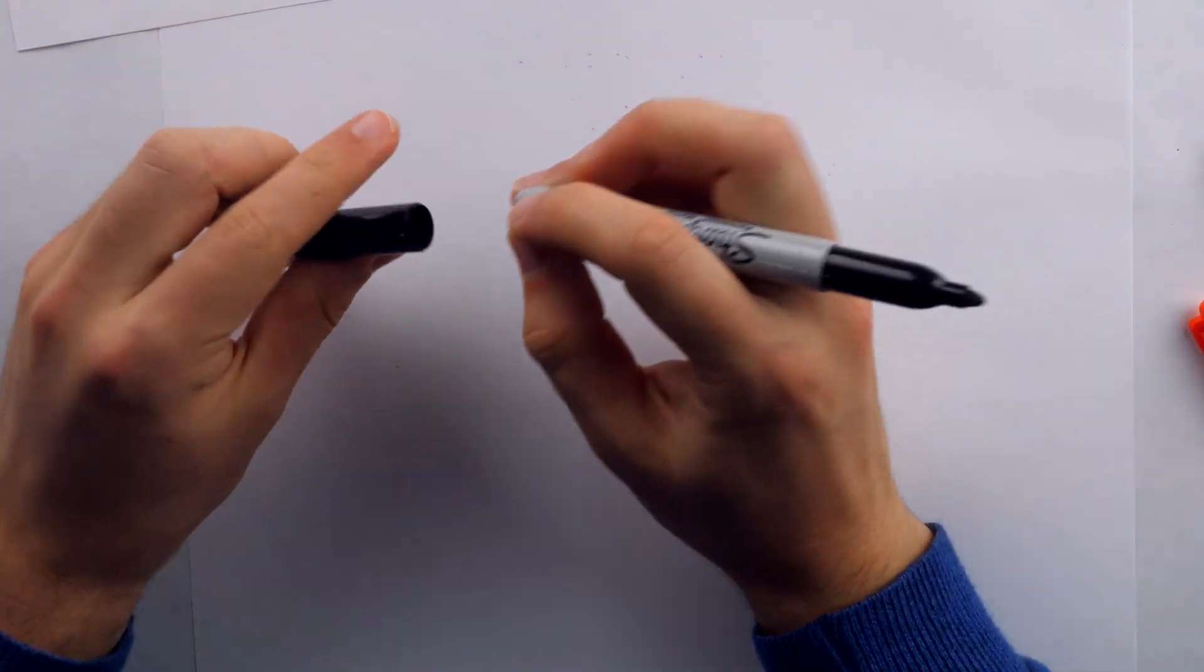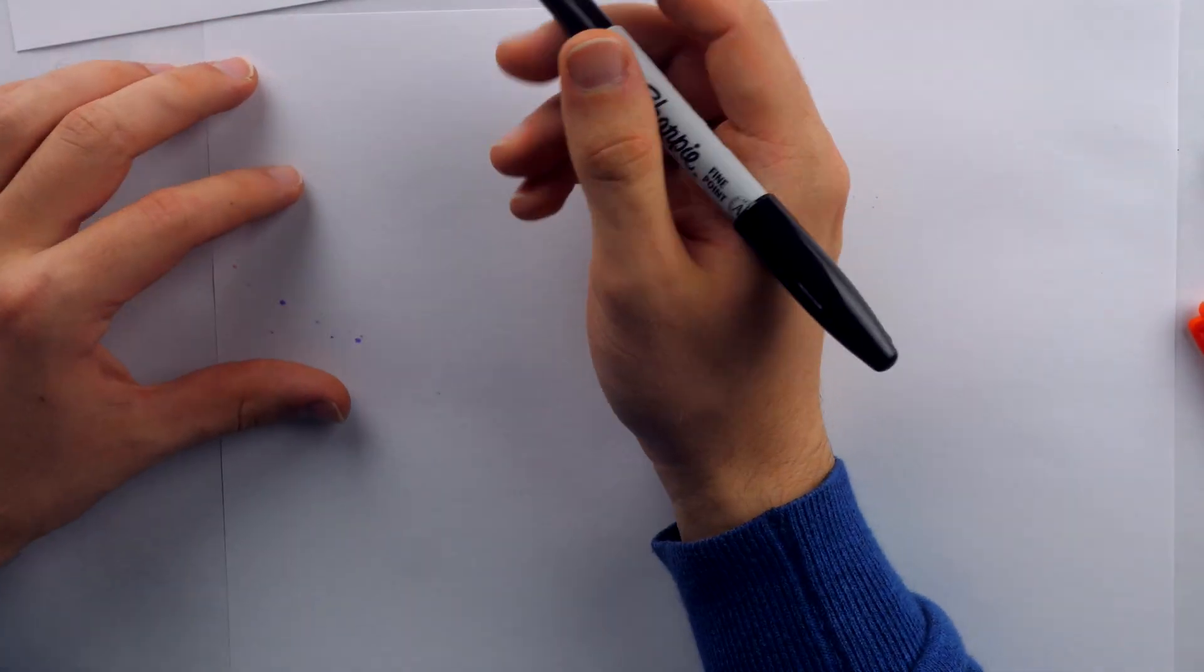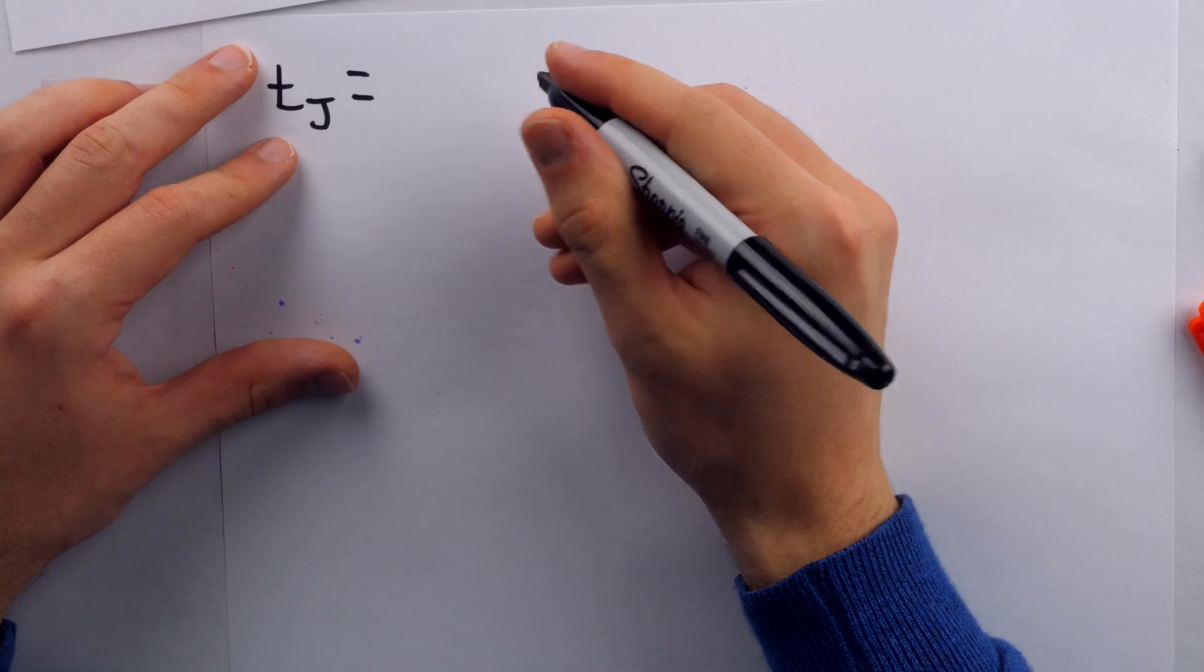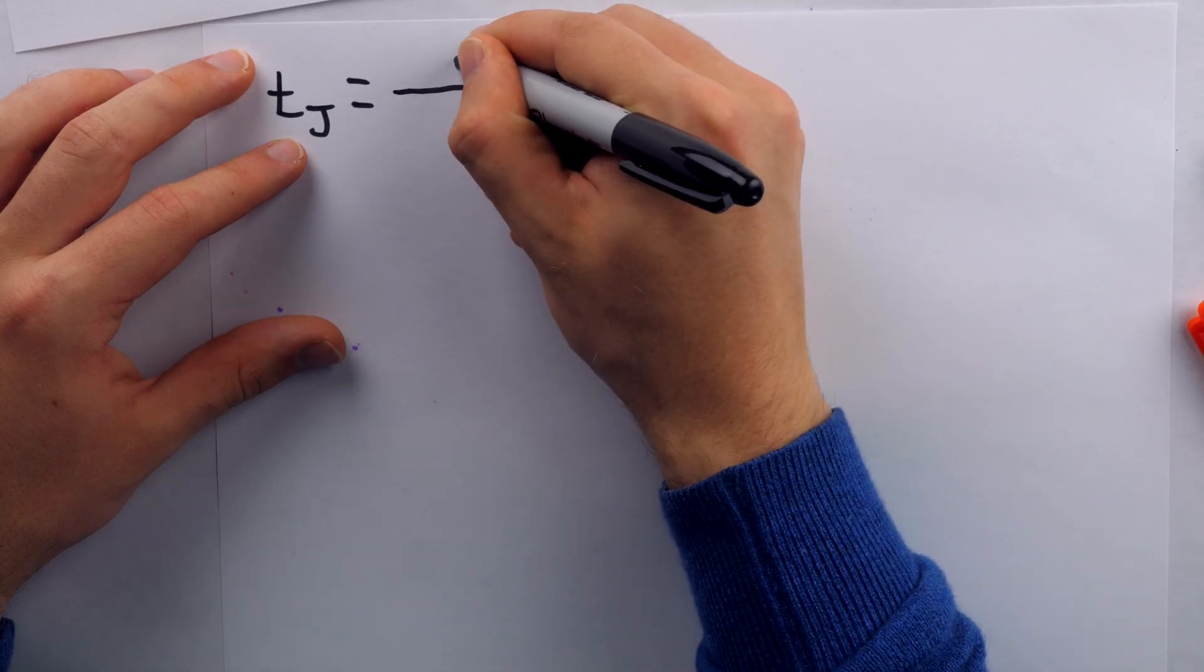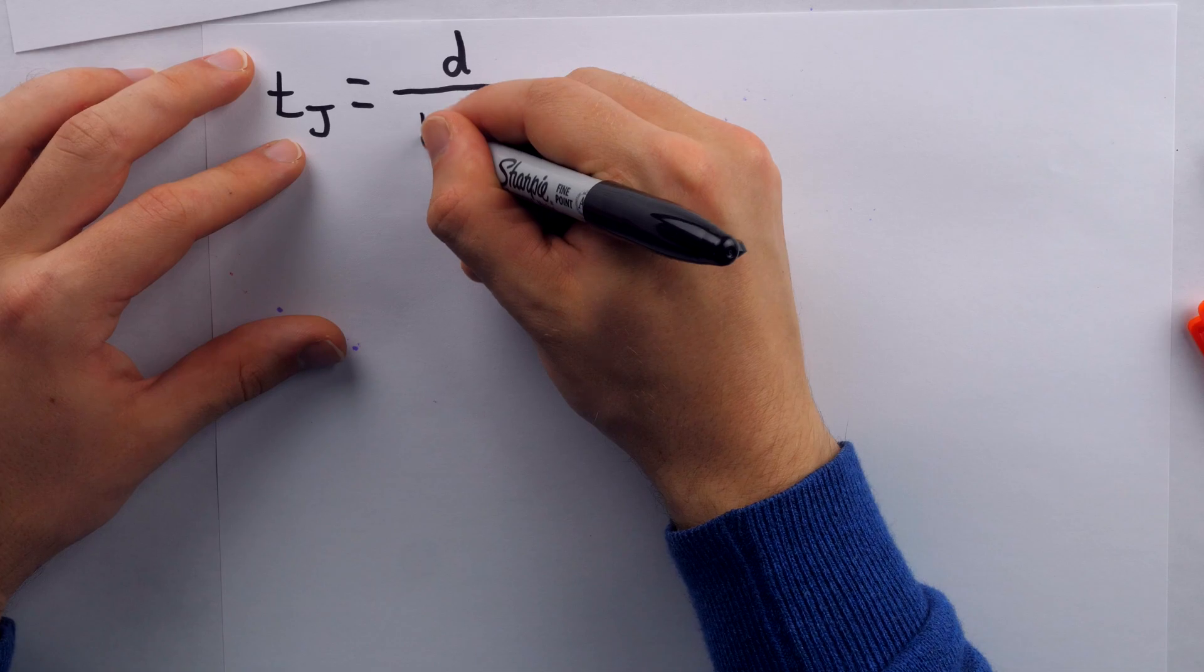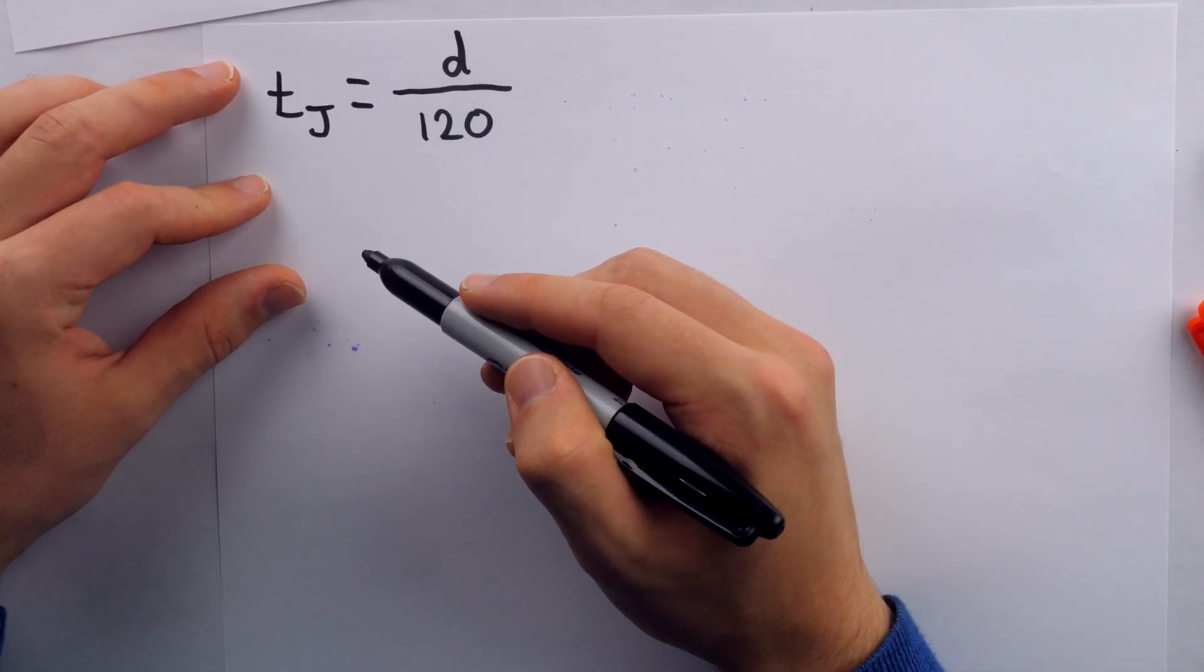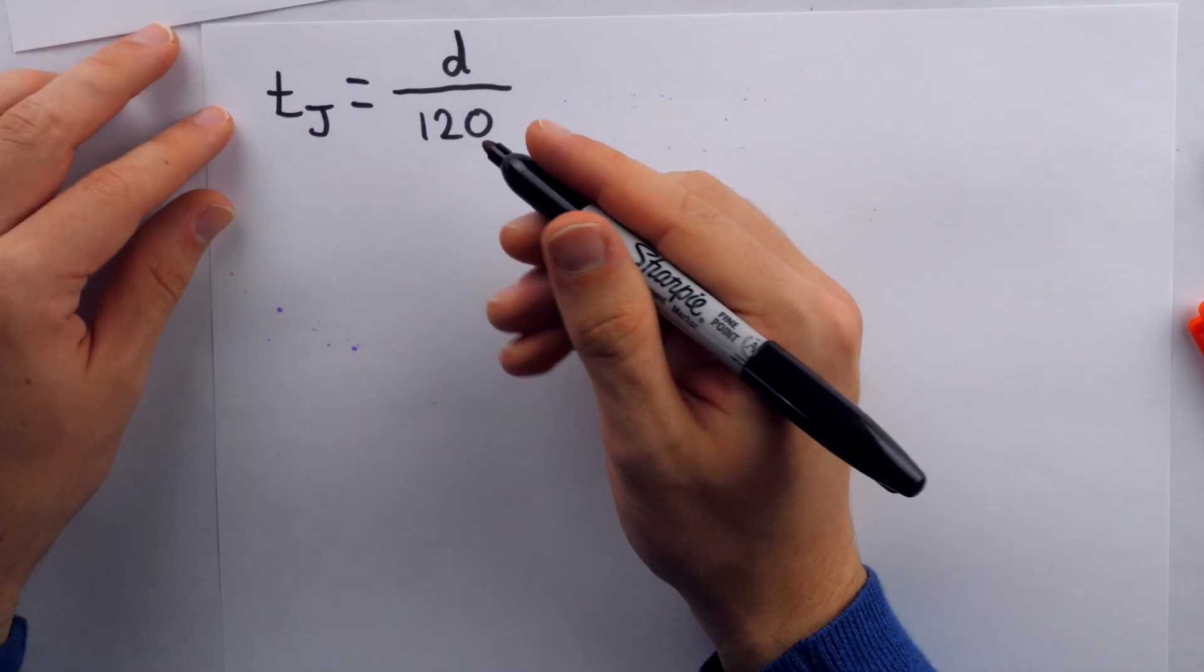Like I said, it's time that's important here. So let's write these things in terms of time. The time that it takes Johnny Speed to finish the race, let's say we write that as t_J. The time it takes Johnny Speed to finish the race is going to be the distance of the track, so let's just say d, the distance of the track, divided by Johnny Speed's speed, which is 120 miles per hour. Since the distance d is in miles and we're dividing by speed 120 miles per hour, this is going to give us the time it takes Johnny to finish the race in hours.